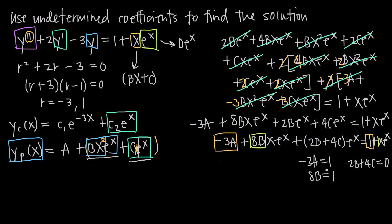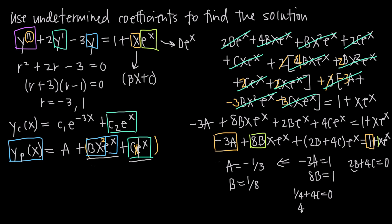Using these three equations: from −3a = 1 we divide by −3 to get a = −1/3. From 8b = 1 we divide by 8 to get b = 1/8. Substituting b into 2b + 4c = 0 gives 2(1/8) + 4c = 0, so 1/4 + 4c = 0. Subtracting 1/4 and dividing by 4 gives c = −1/16.